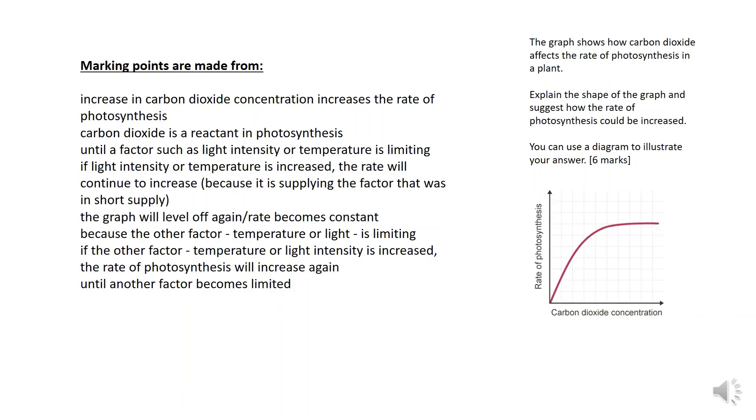Let's go through the answer. Start off by explaining how as carbon dioxide concentration increases, so does the rate of photosynthesis. Carbon dioxide is a reactant until another factor becomes limiting, such as temperature or light intensity. This is shown by the graph leveling off. You can increase the rate of photosynthesis again by increasing the factor that was in short supply and was therefore the limiting factor. The graph will again level off as another factor becomes limiting, which will then need to be increased in order to increase the rate of photosynthesis.